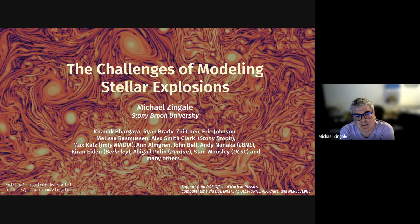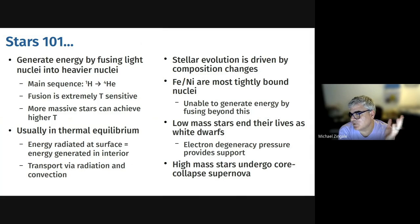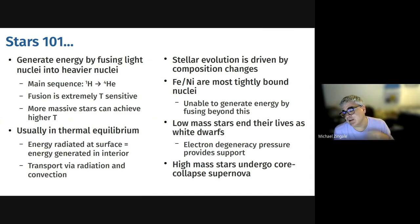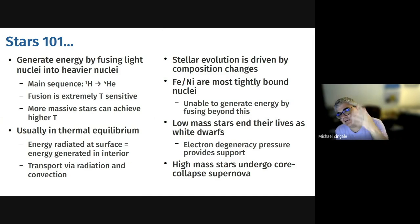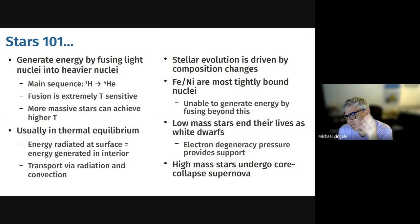I'll talk about some of the challenges that we face. Just to give some background for a diverse audience - our sun is usually thought of as a pretty average star, currently midlife. It's generating its energy by fusing hydrogen into helium, and will do that for about 9 to 10 billion years total. After it exhausts its hydrogen supply, its structure will adjust and it'll start to burn helium into carbon.